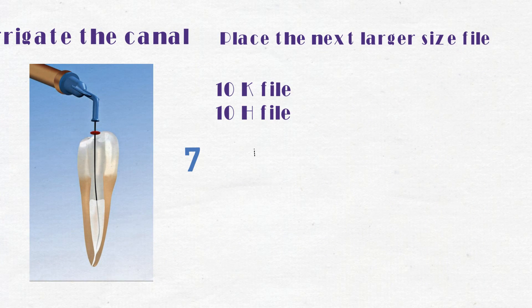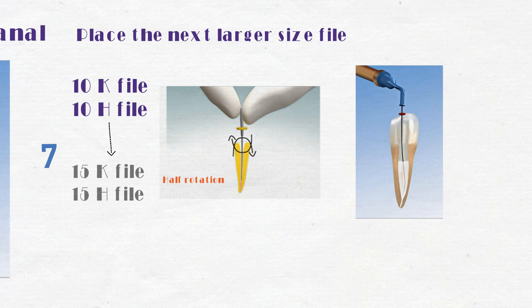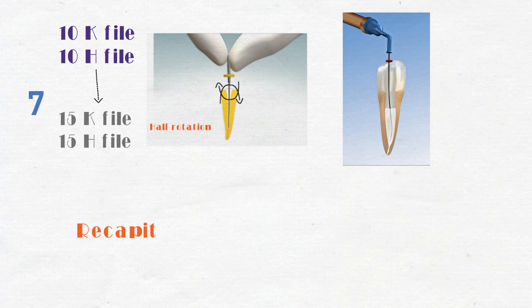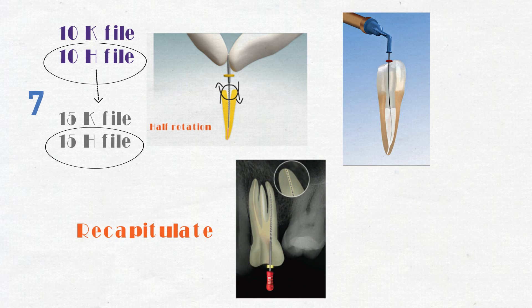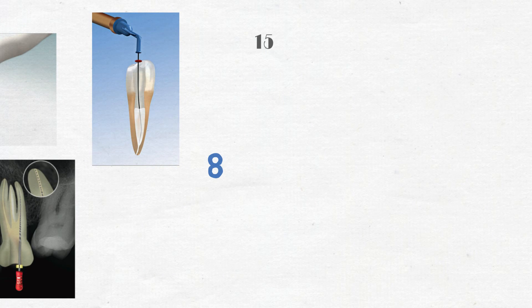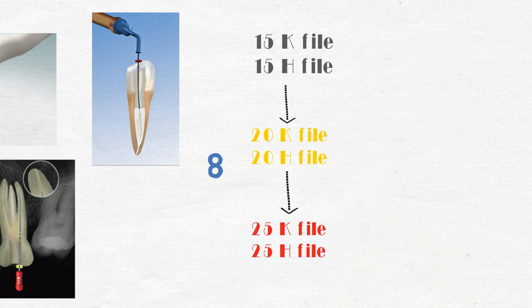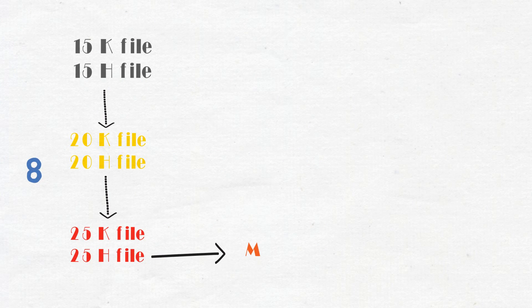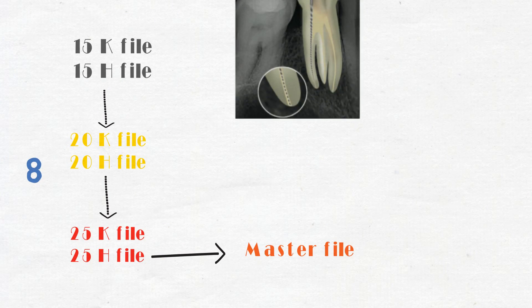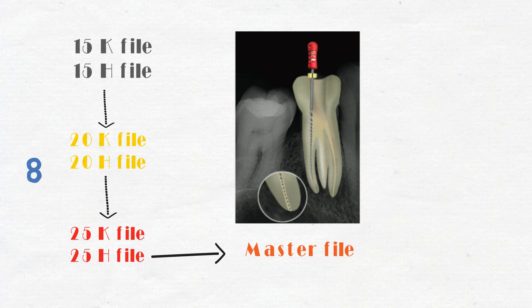Place the next larger size file to the working length in the same manner and again irrigate the canal. Don't forget to recapitulate the canal with the previous size number of H-file. This breaks up the apical debris, which are washed away with the irrigant. Repeat the process until size 25 or 30 H-file has reached the working length. That will be the master file or recapitulate between the files by placing into the working length.